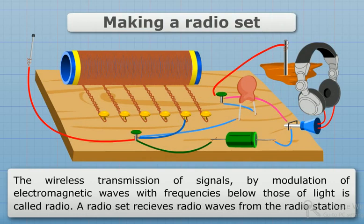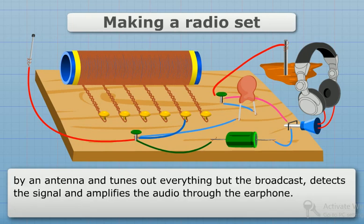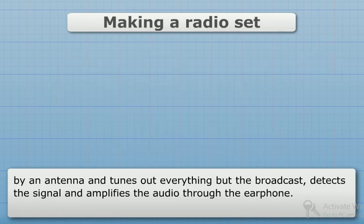Making a Radio Set. The wireless transmission of signals by modulation of electromagnetic waves with frequencies below those of light is called radio. A radio set receives radio waves from the radio station by an antenna and tunes out everything but the broadcast, detects the signal and amplifies the audio through the earphone.